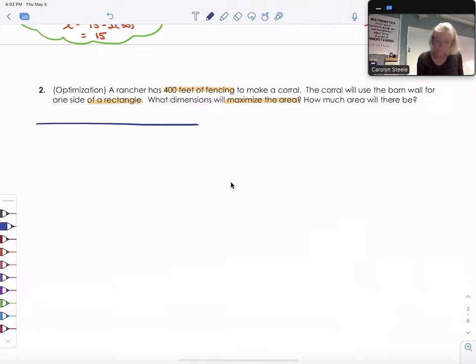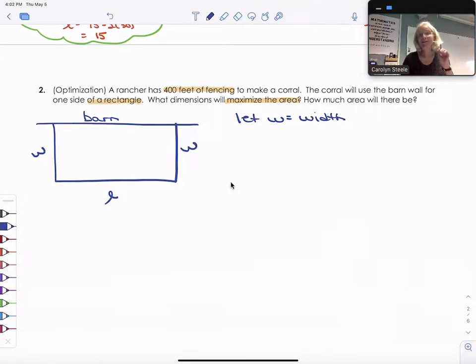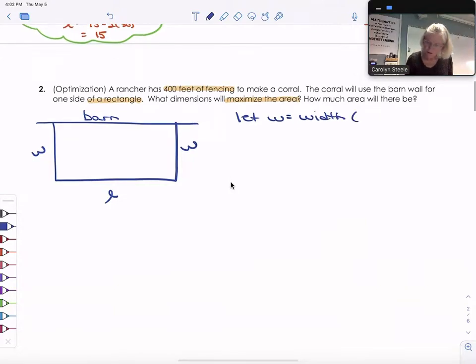Here's my barn. And this corral is going to be a pen that has three sides of fencing again. Let's use our same variables, width and length. And let w equals width. I realized on the last problem, I forgot my units. Always remember those units. So it's going to be width in feet.